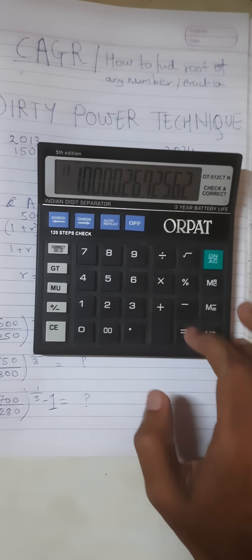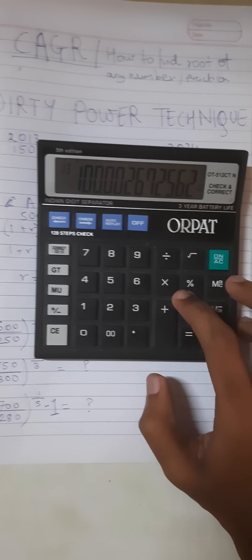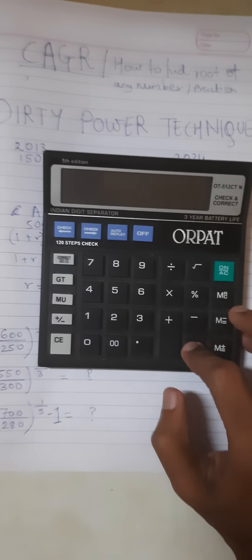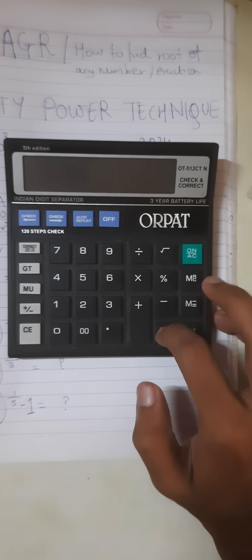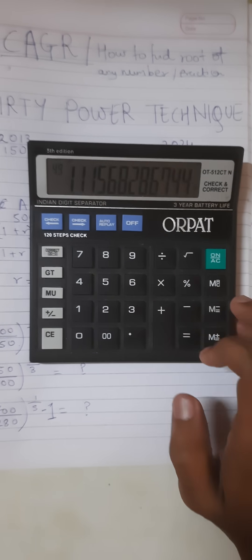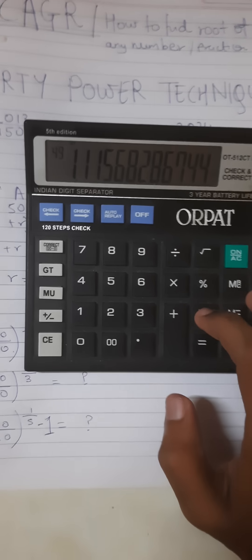And now we have to press equals 12 times: 1, 2, 3, 4, 5, 6, 7, 8, 9, 10, 11, 12. So this is the answer that we get.